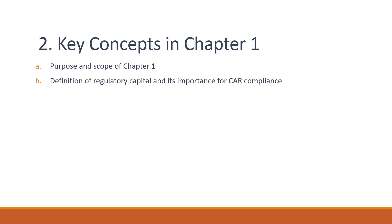Definition of Regulatory Capital and Overview of Tier 1 and Tier 2 Capital: Regulatory capital is the minimum amount of capital that banks are required to hold under the CR Framework, and it's important for banks to comply with these requirements to ensure their stability and soundness. Tier 1 Capital is the highest quality capital and includes common equity and retained earnings, while Tier 2 Capital is lower quality and includes items such as subordinated debt and certain types of hybrid instruments.